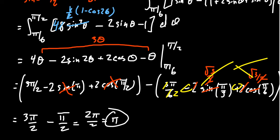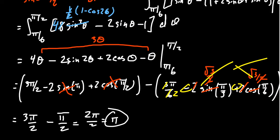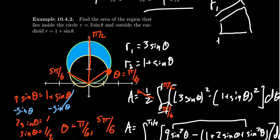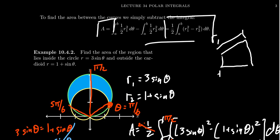That equals pi, so the area between these two curves is exactly pi. When dealing with the area between two polar curves, think of the washer method — you need a difference of squares, not the square of a difference. There is a difference there, pun intended. If you use this difference-of-squares formula for the area between two polar curves, you'll be just fine.